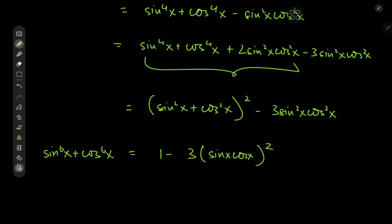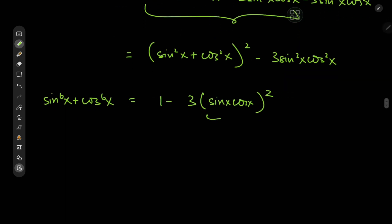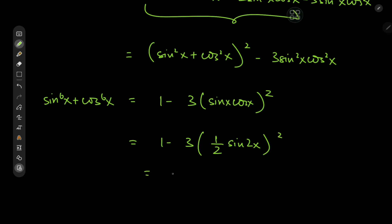We can simplify further because sinx·cosx equals one half of sin2x, so we have 1 minus 3 times (½·sin2x)² — which of course gives us 1 minus ¾·sin²(2x).